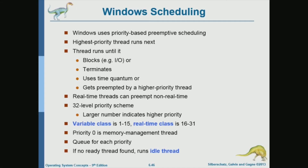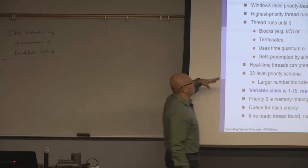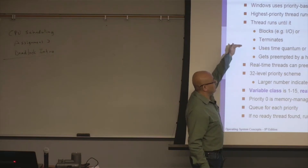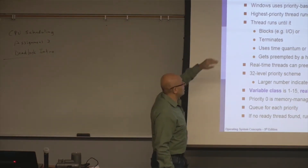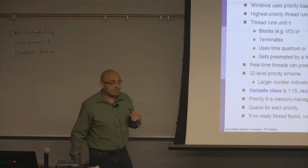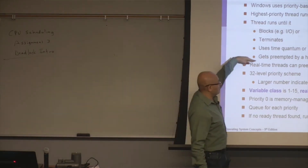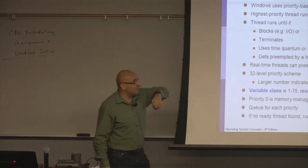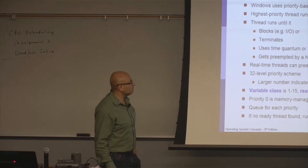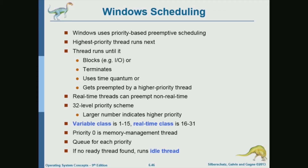The scheduling algorithm on Windows is also priority-based and preemptive. A thread will run until it blocks, until it requests I/O for example, or until it terminates, or until its time quantum expires, or until it gets preempted by a higher priority thread. Real-time tasks or threads can preempt non-real-time, because real-time is the highest priority level in the system.